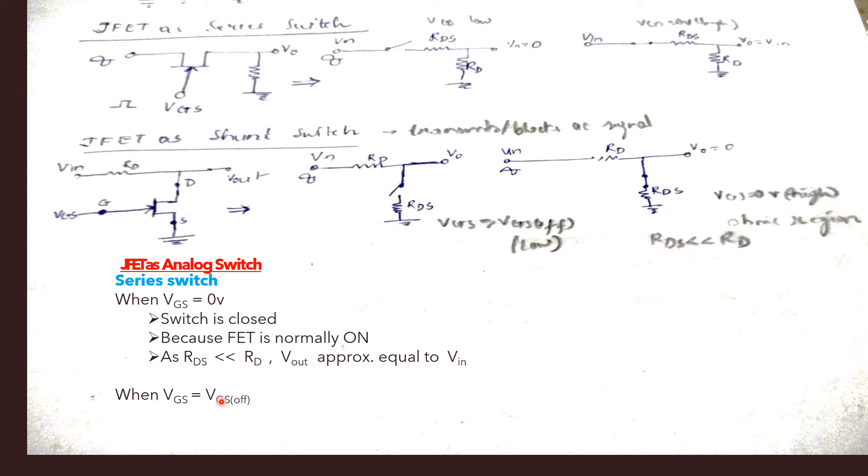When VGS is equal to VGS OFF, the switch is open. We can see in this circuit the FET is replaced in the form of a switch. When VGS equals VGS OFF, the switch is open. The FET is off, so we cannot transfer this input to the output. VOUT is 0.